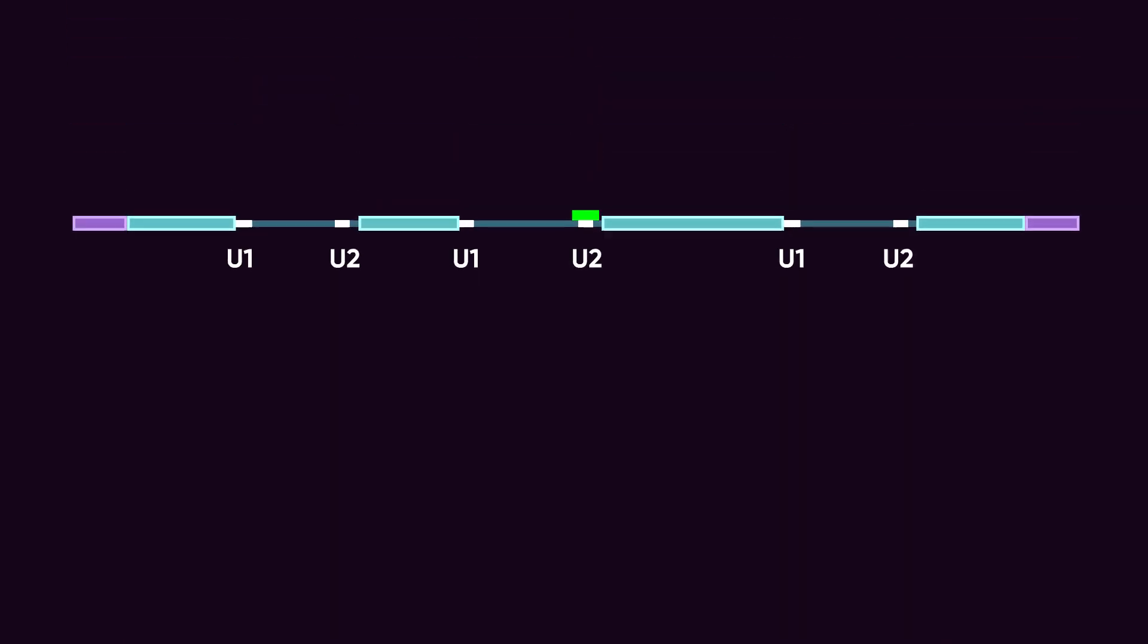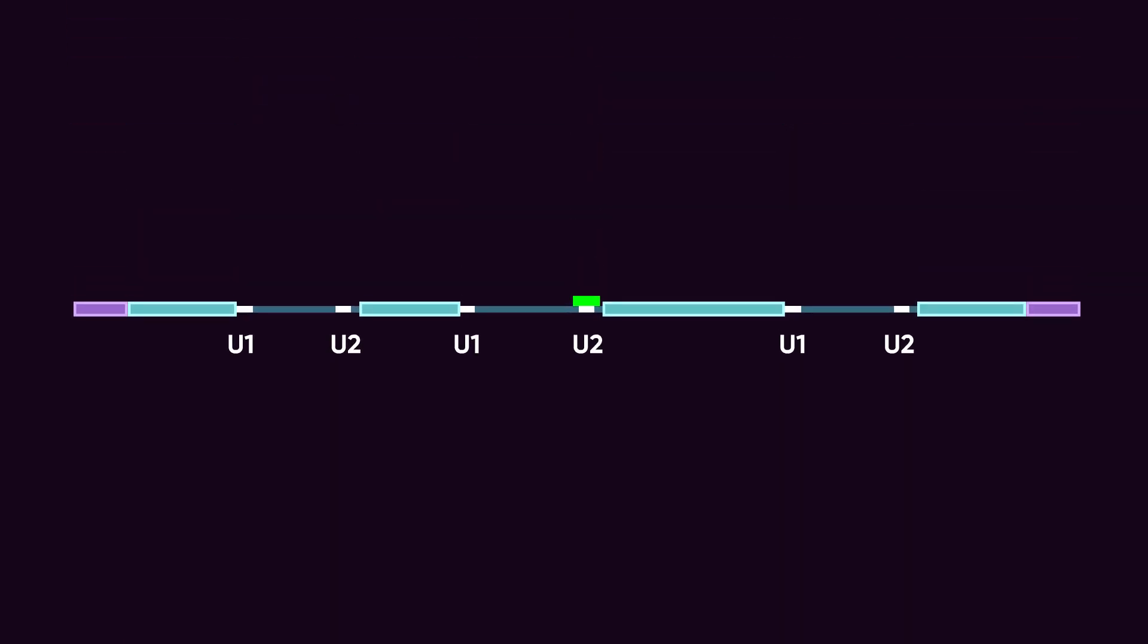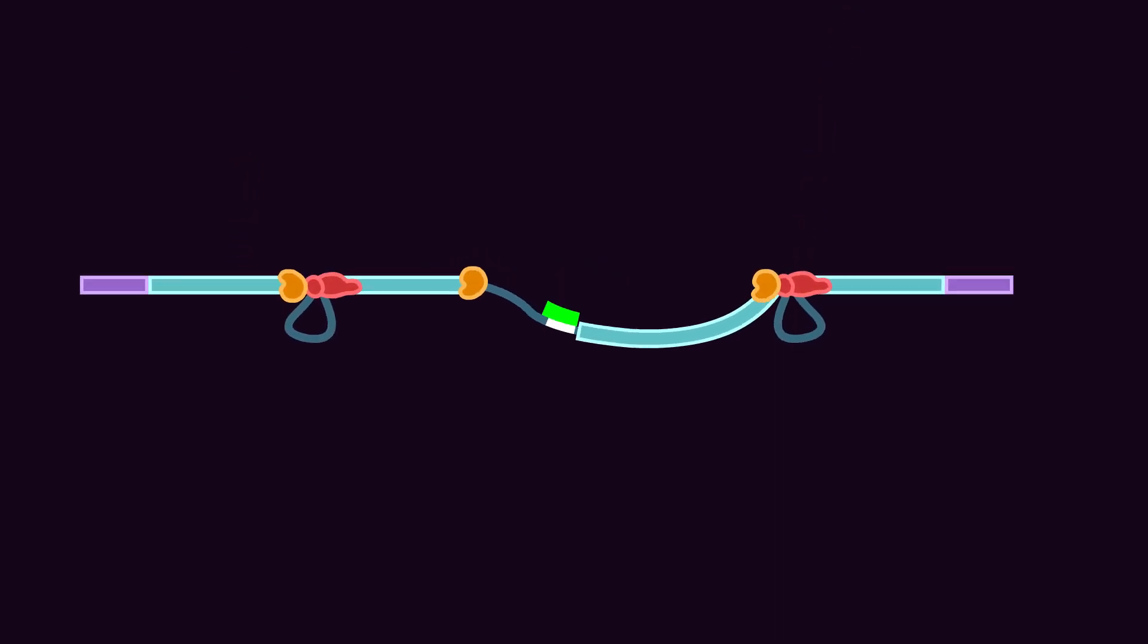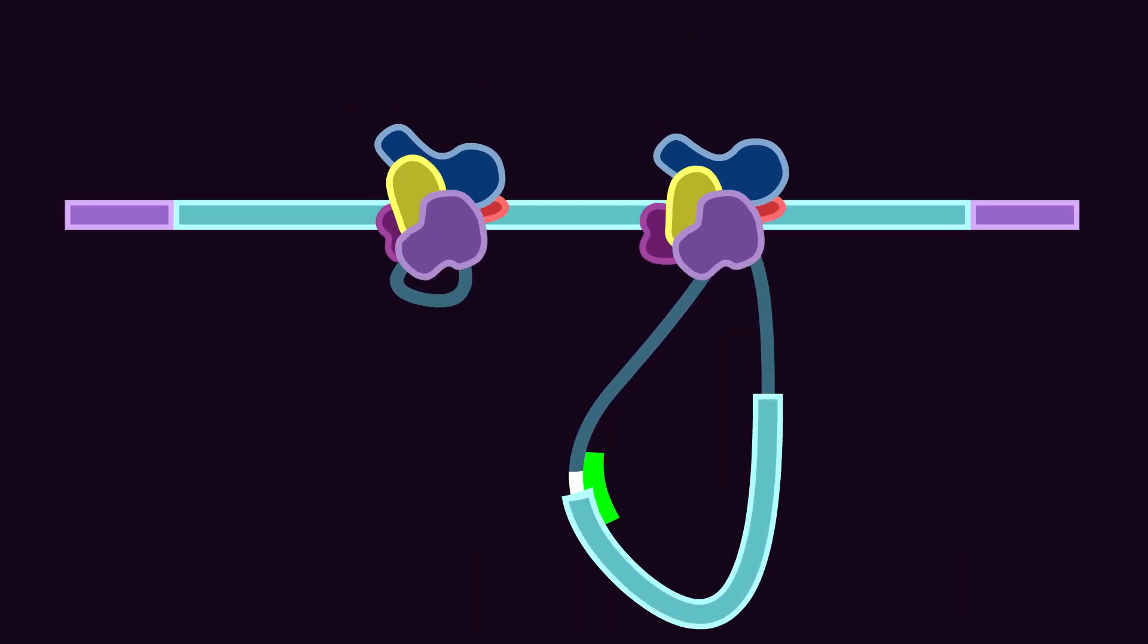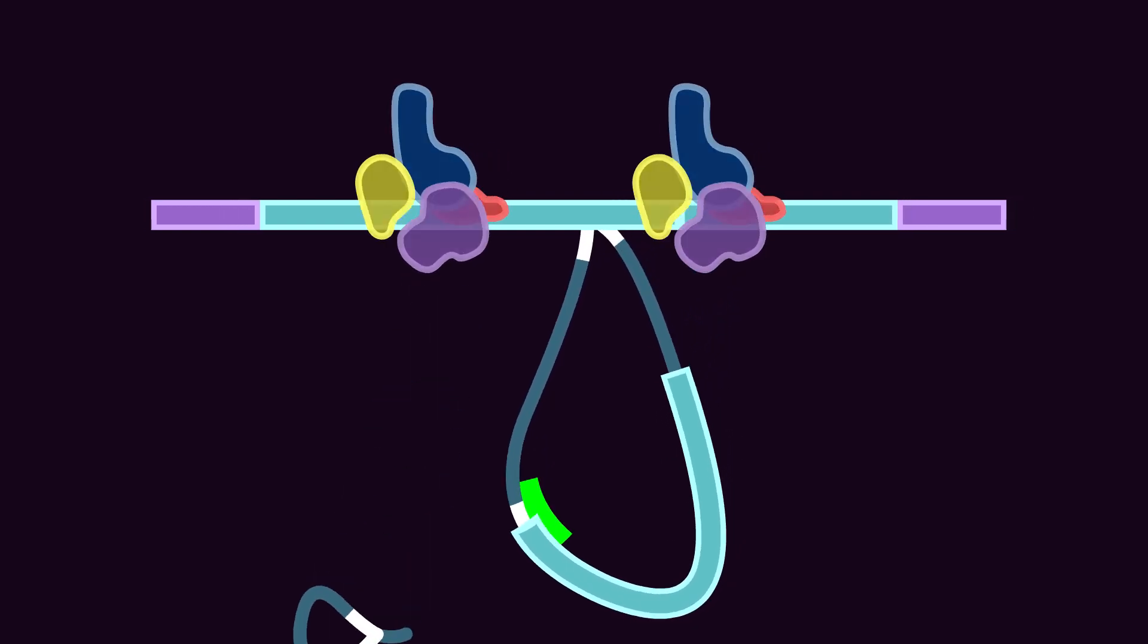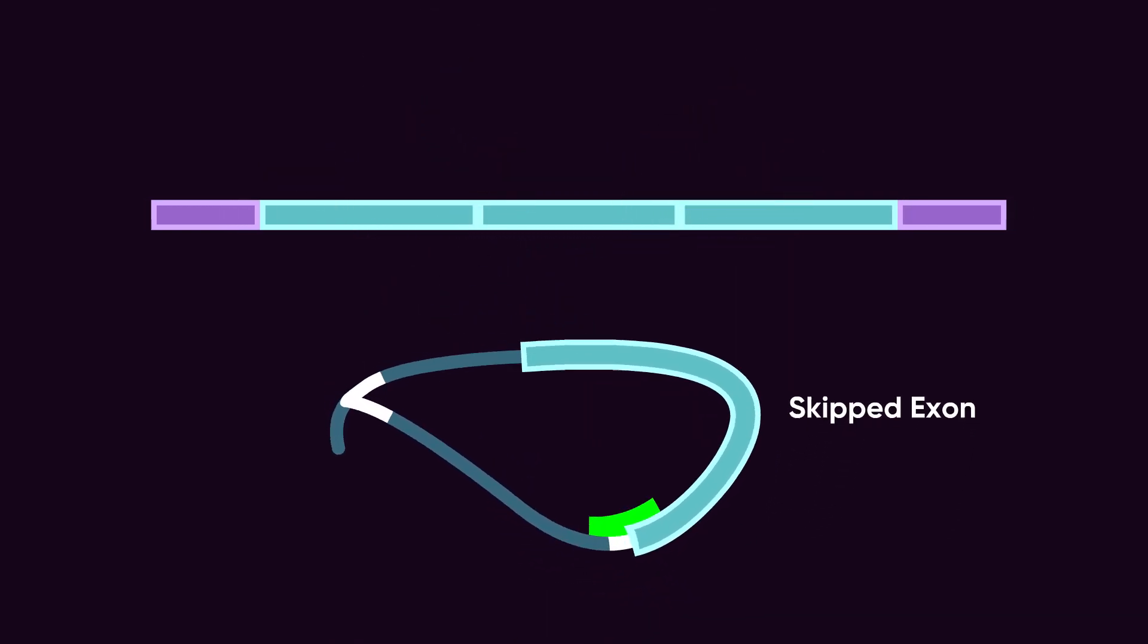Now back to internal splice sites and we'll look at the other side of the introns. If an internal U2 site is blocked, its corresponding U1 typically directs the splice to the next U2 site downstream. This leads to skipping the exon in contact with the blocked U2 site.